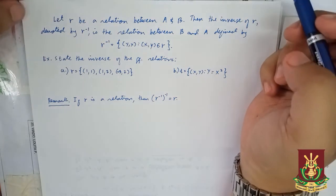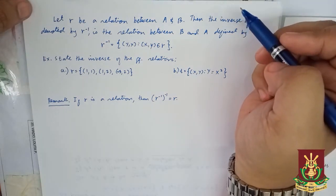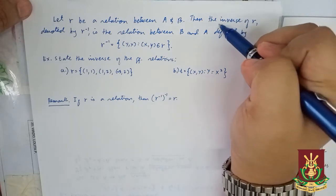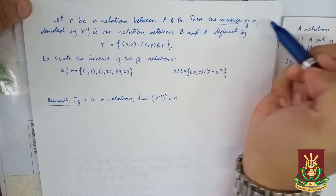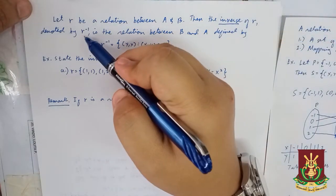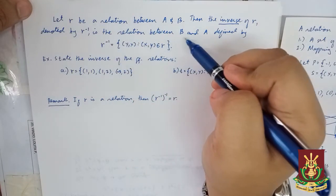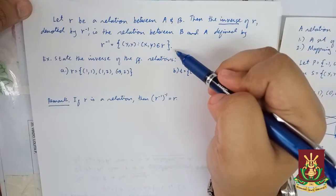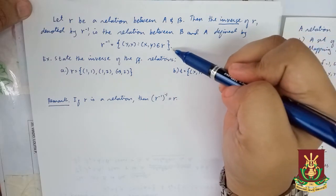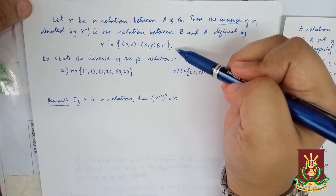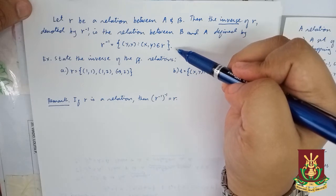Finally, let R be a relation between A and B. Then the inverse of R, denoted by R inverse, is the relation between B and A defined by this set. So we have R inverse equal to the set of all ordered pairs (Y, X) such that the ordered pair (X, Y) is in R.